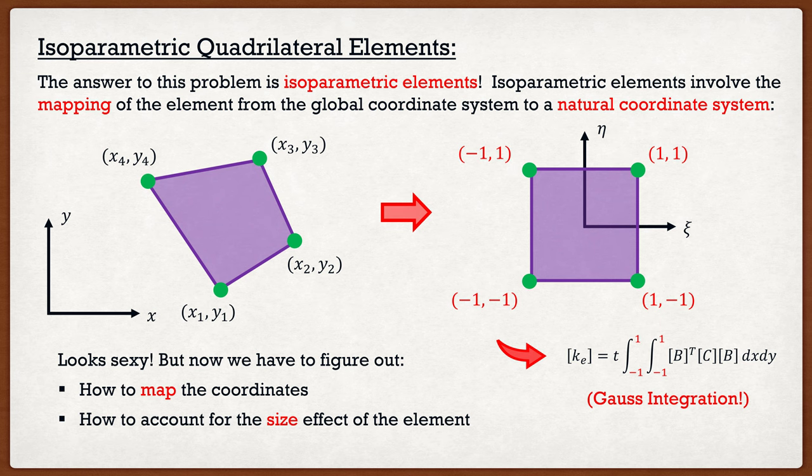The second problem is accounting for the size effect. In the natural coordinate system, the nodes are always at ±1, so the element area is always 4 (side length 2, times 2). But the element we're mapping could have any area — say 20 or 0.1. We're either increasing or decreasing that area when we map to the natural coordinate system, so we need to account for that change in size. These are the two things we're going to explore.